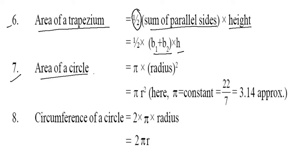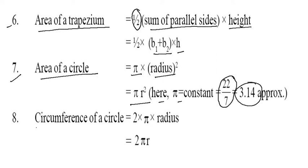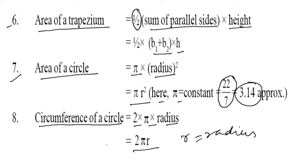Seventh, area of circle is pi into radius square, that means pi r square, where pi is the constant — you can say twenty-two upon seven or approximately 3.14. Eighth, circumference of a circle is 2 pi into radius, or 2 pi r, where r is the radius of the circle.